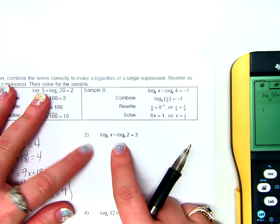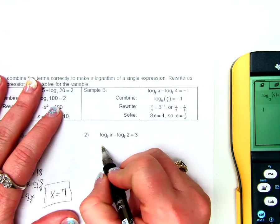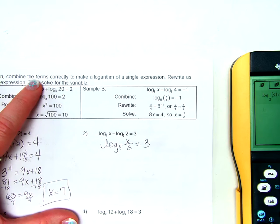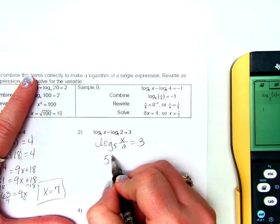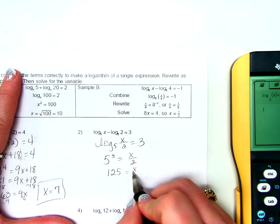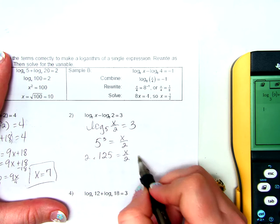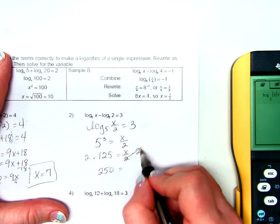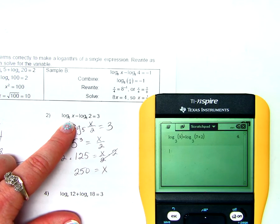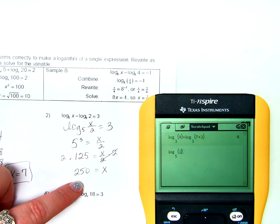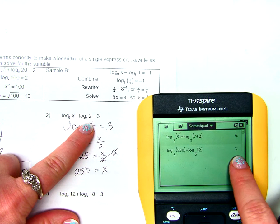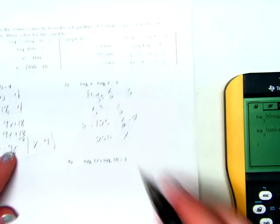Problem 2: combining the two logs gives log base 5 of x over 2 equals 3. Converting to exponential form gives 5 to the 3rd equals x over 2. Since 5 cubed is 125, multiplying both sides by 2 gives x equals 250. Checking with a calculator: log base 5 of 250 minus log base 5 of 2 equals 3. Correct!